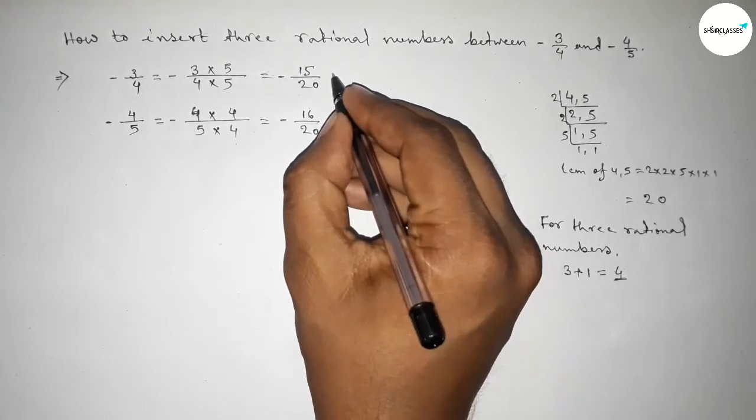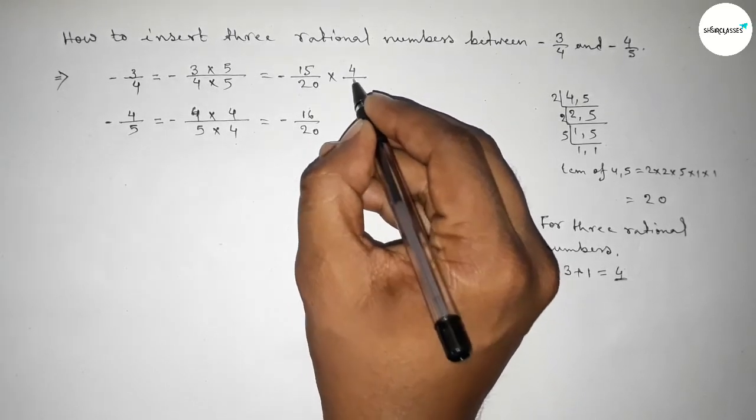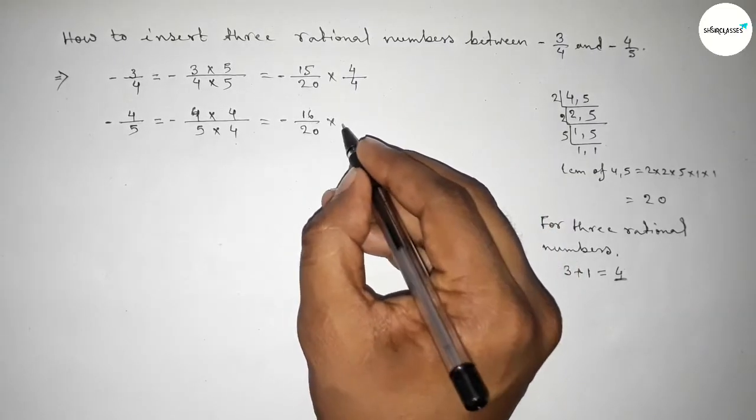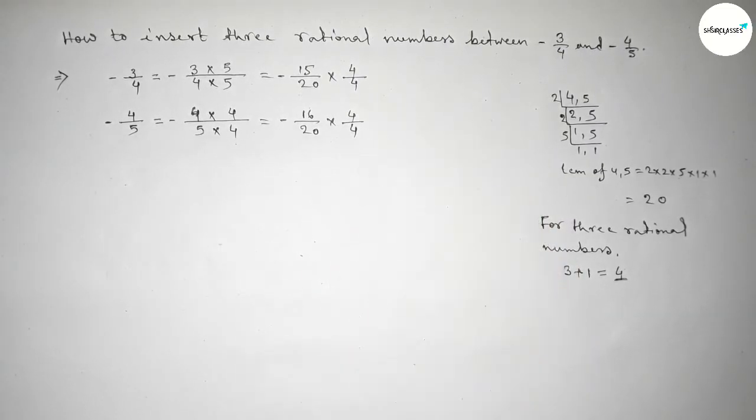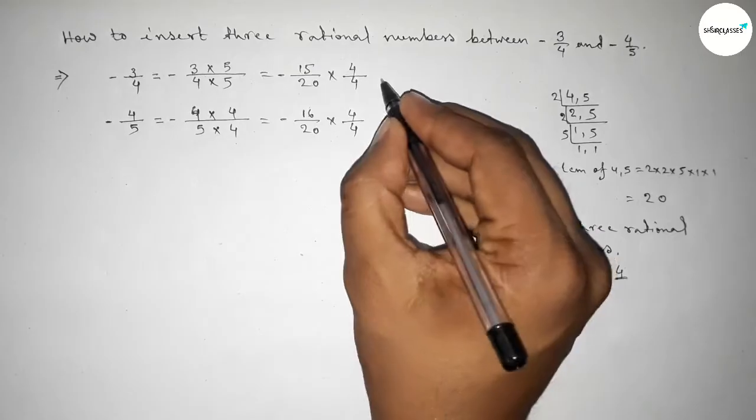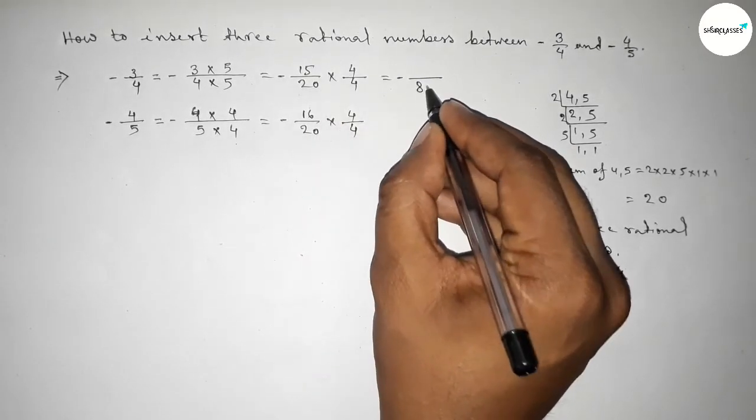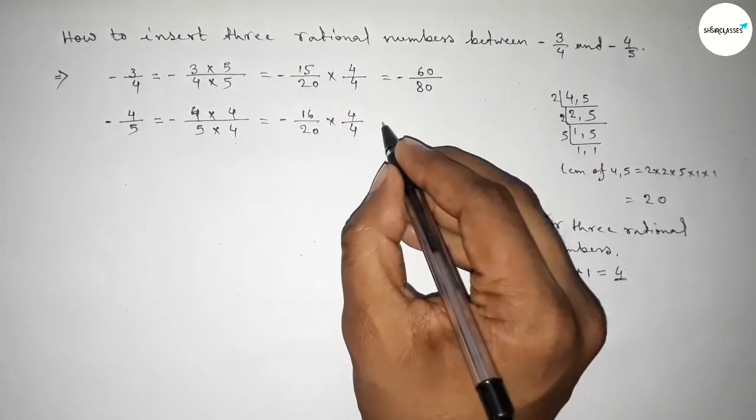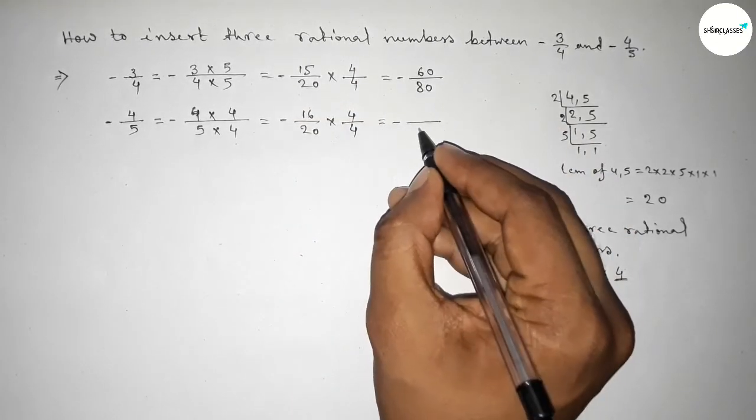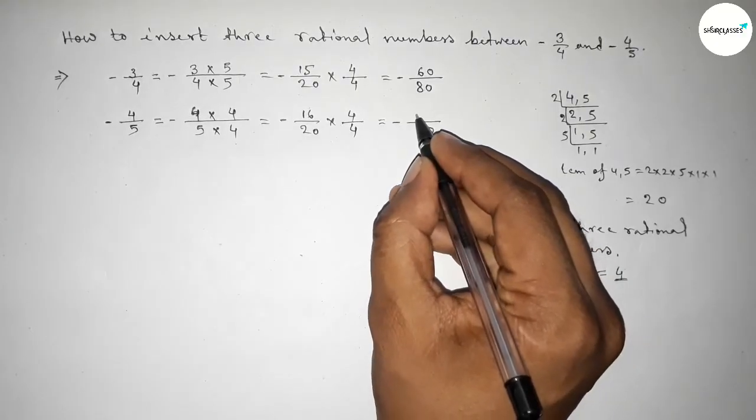So here 4/4 and here also 4/4. So multiplying this, minus this one 80, and this one minus 60, and here this one 80, and minus 64.